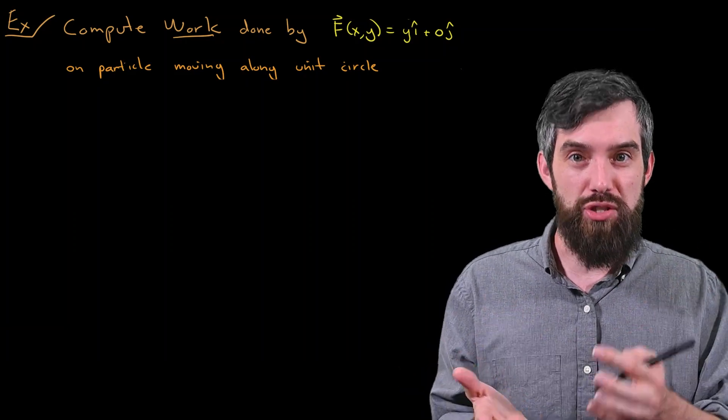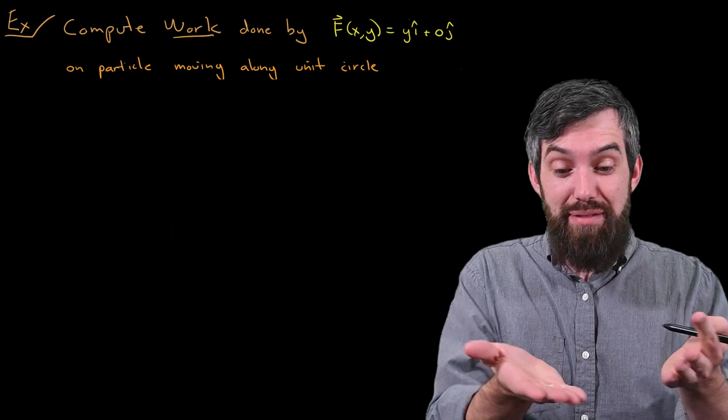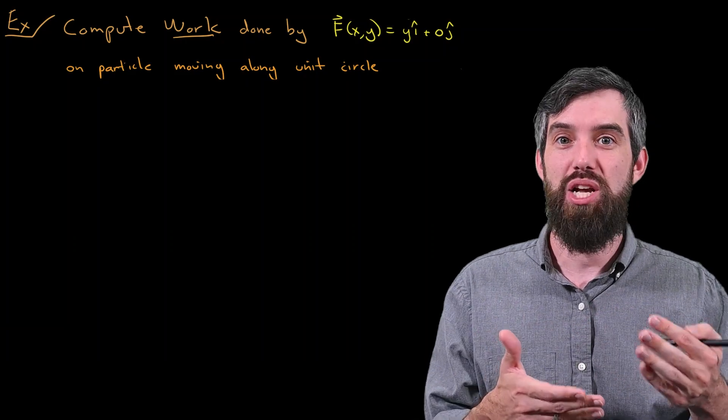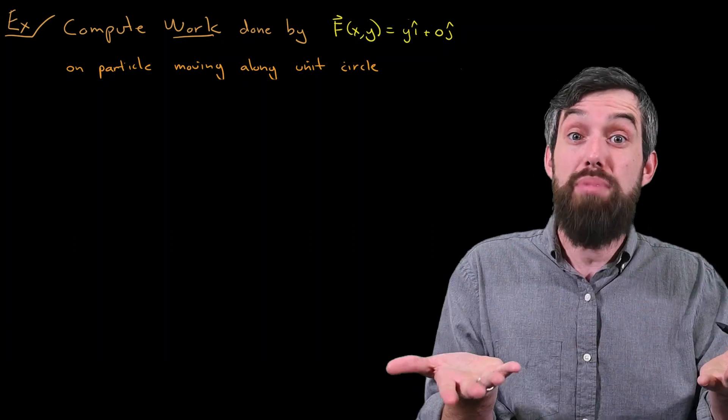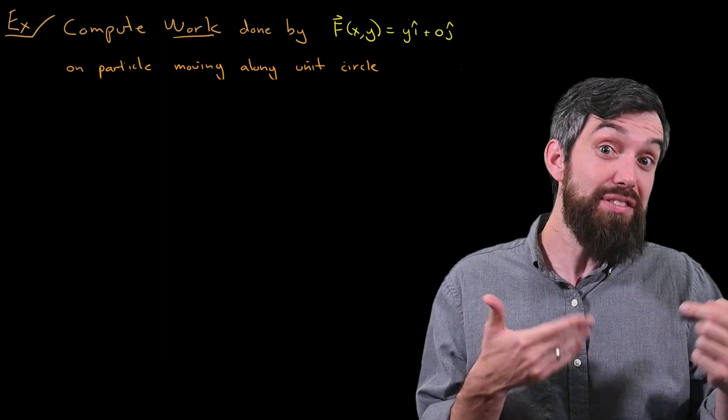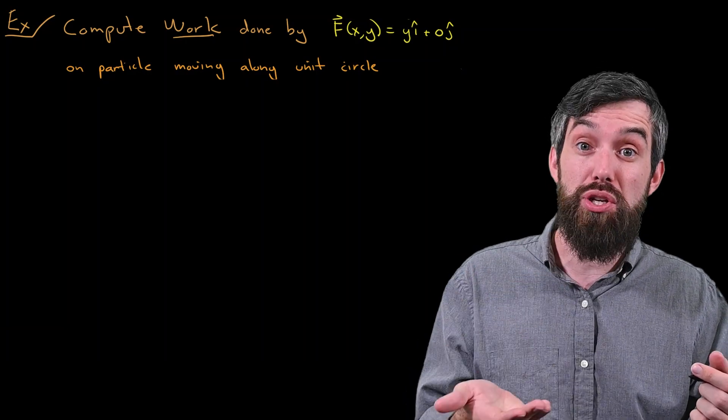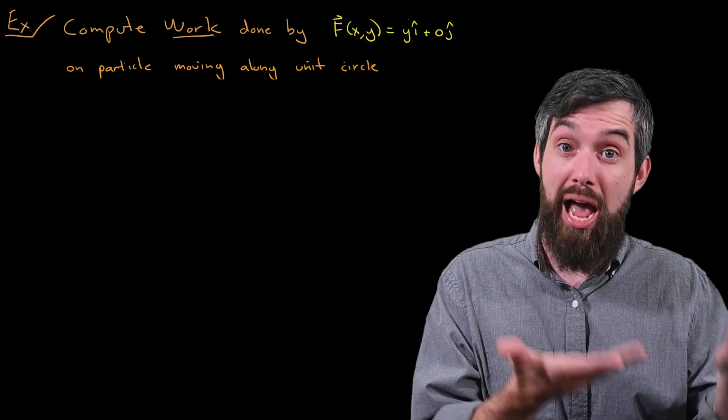So what's our example? I have some vector field, f(x,y) = y*i-hat plus nothing in the j-hat component. And then I have some curve. It's the standard unit circle rotated around once counterclockwise.